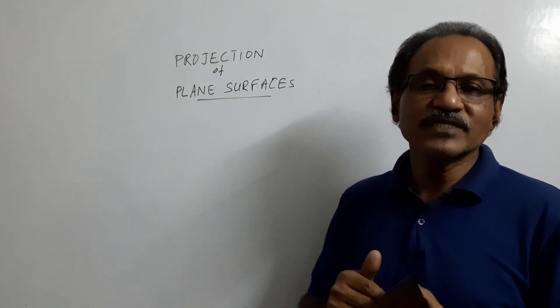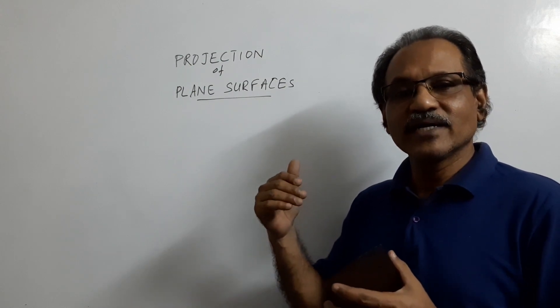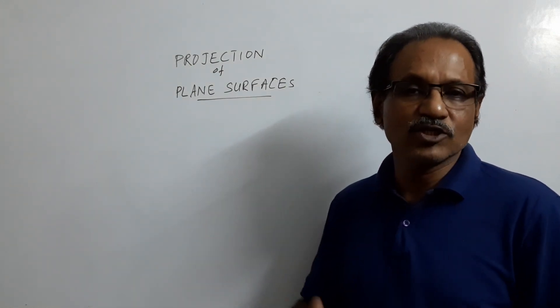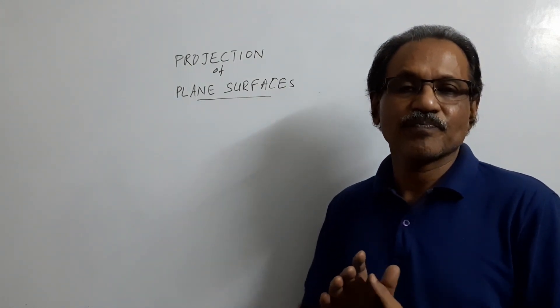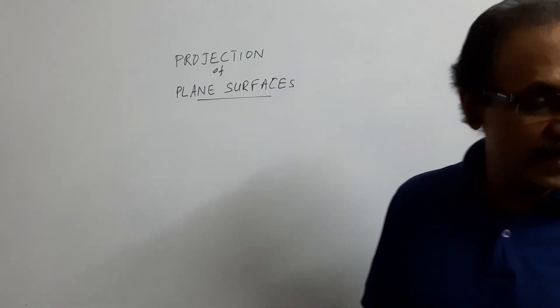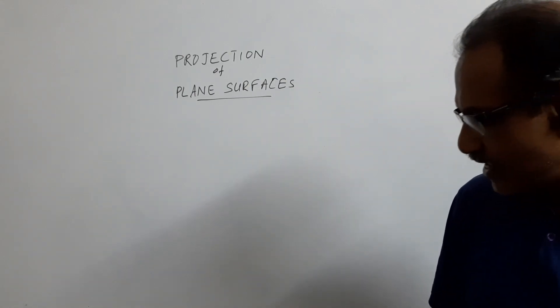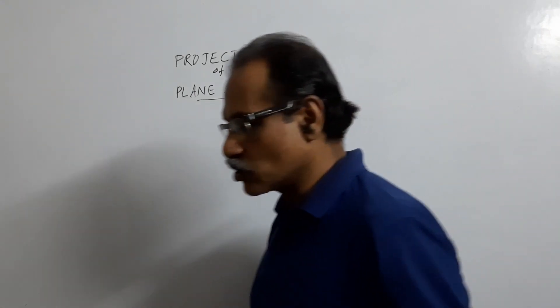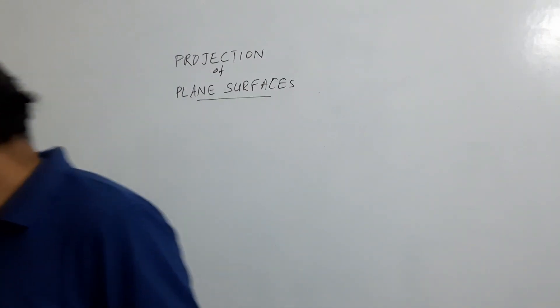First of all, we will see the lamina inclined to HP and perpendicular to VP. Then we will see the lamina inclined to VP and perpendicular to HP. But before going there, let us see how these geometrical shapes are constructed.